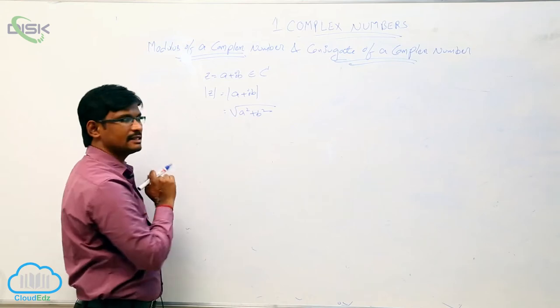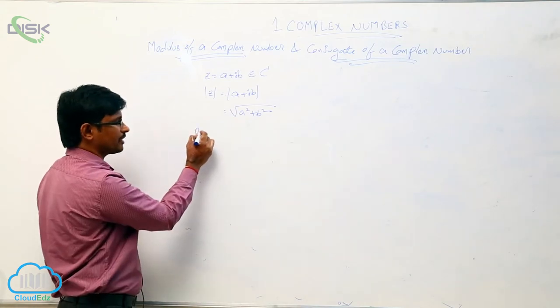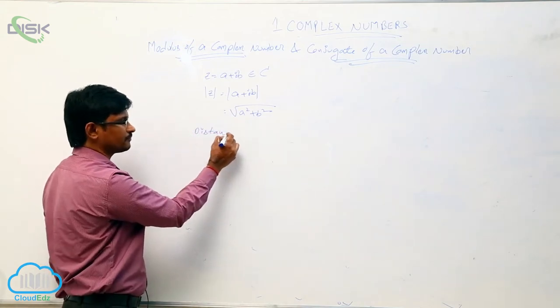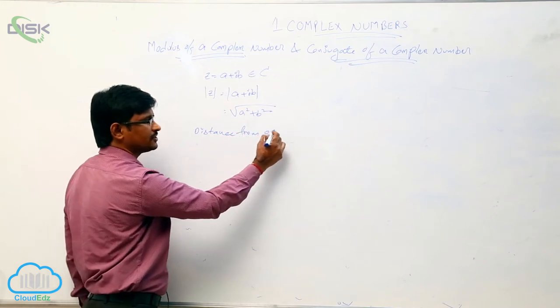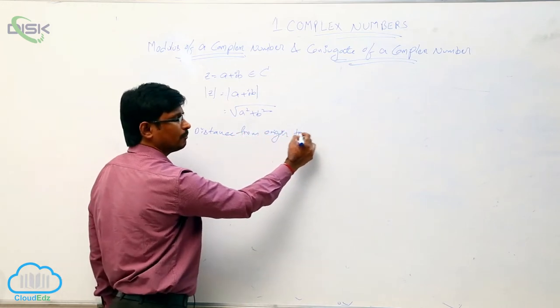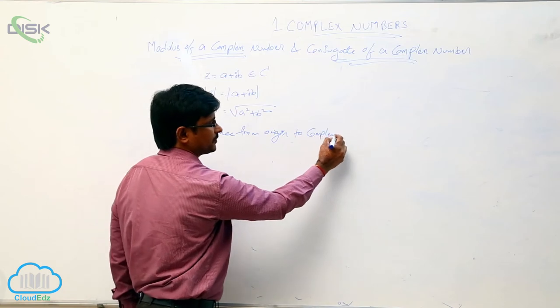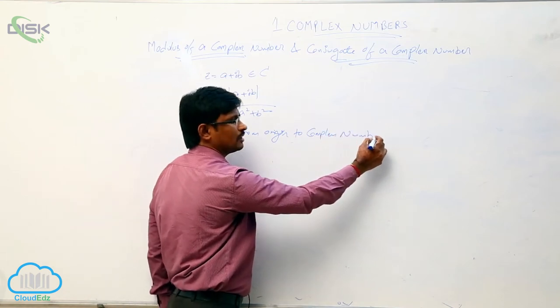This mod of z is nothing but distance from origin, distance from origin to complex number. This is nothing but mod z.